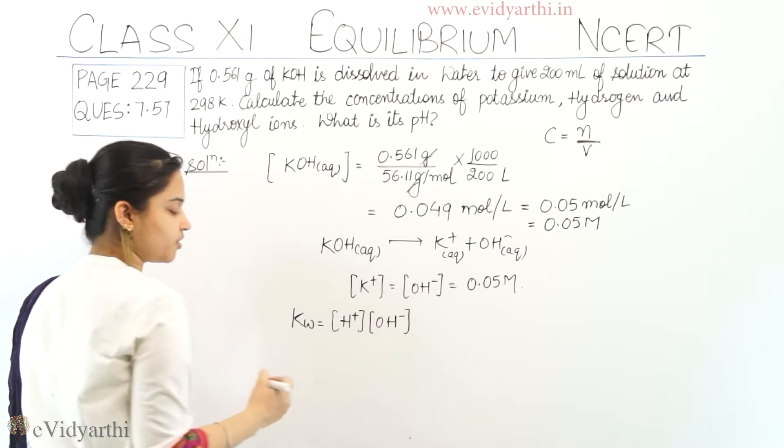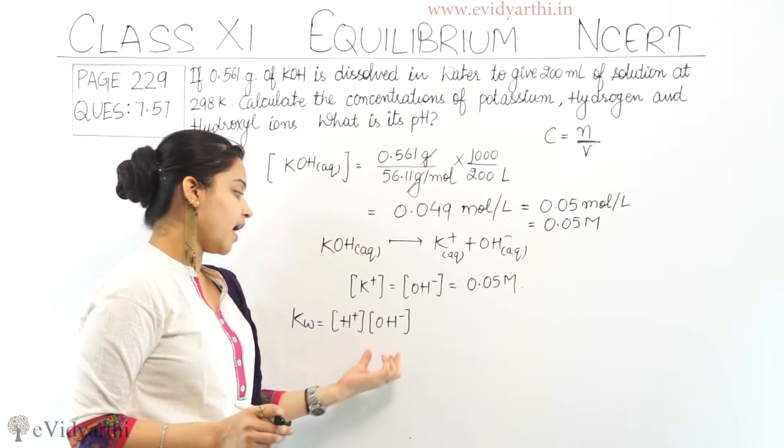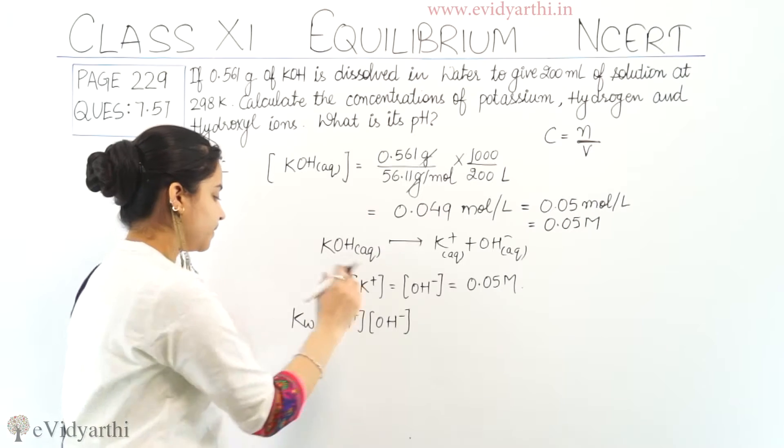Matla, ionic product of water is equals to multiplication of concentration of H positive and concentration of OH negative ions. Correct?